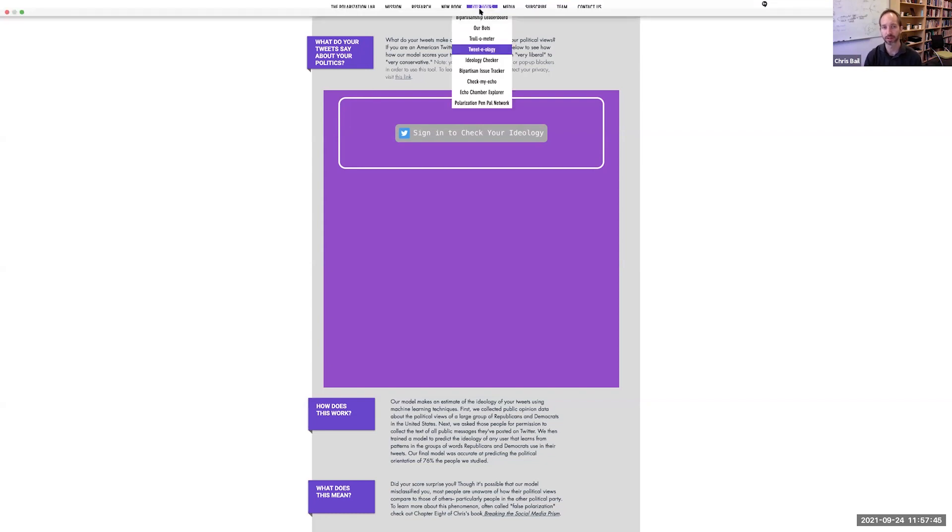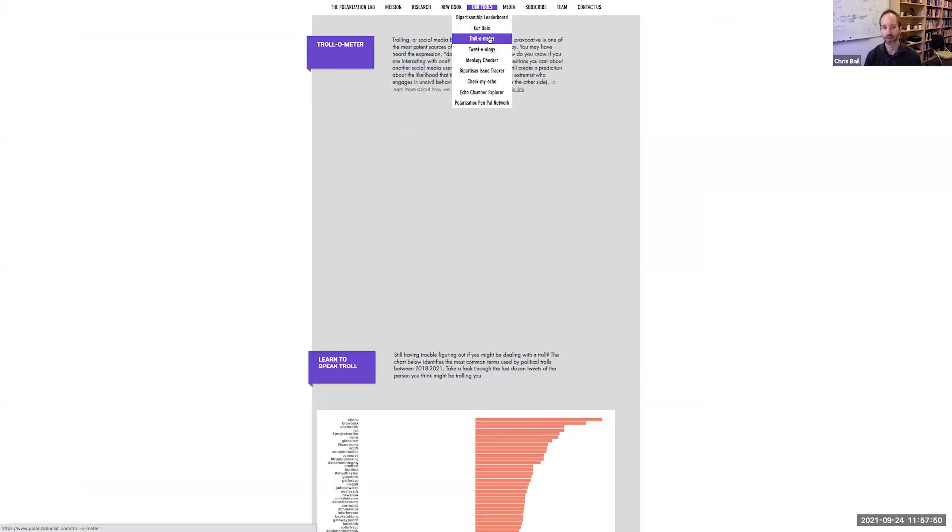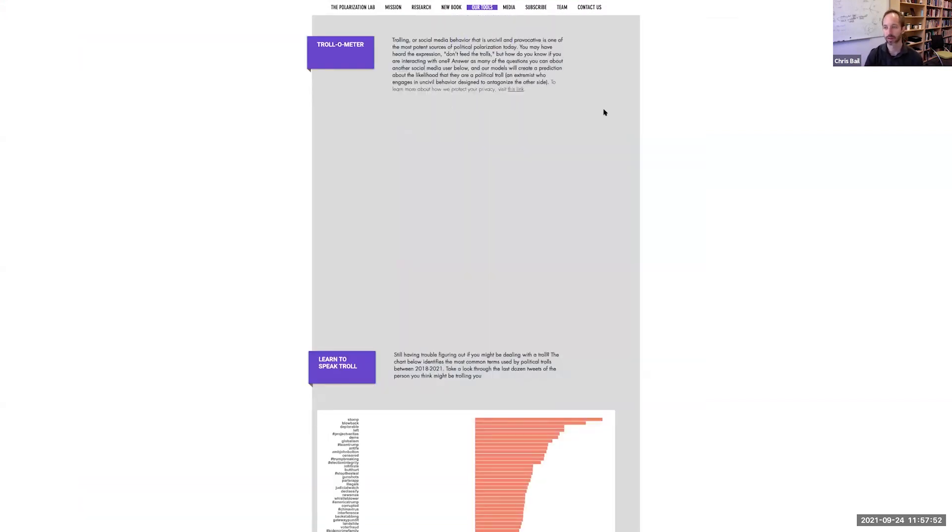If you come to our website and go to our tools, you can see what's often called middleware. Middleware is something you use in tandem with a social media site to create a different experience. Many of you are probably frustrated with the platforms right now. This is going to help you change it. Let's try to see the prism. Maybe we'll start with our trollometer.